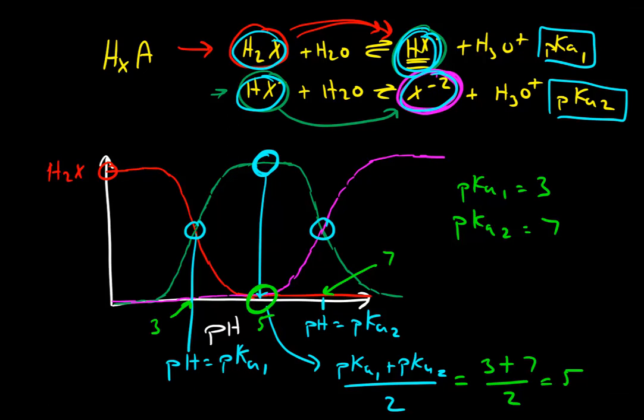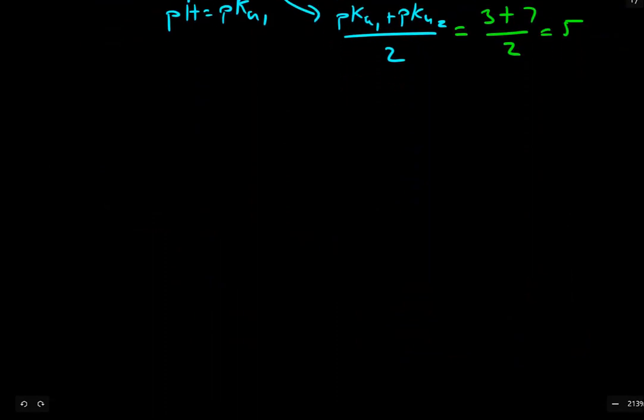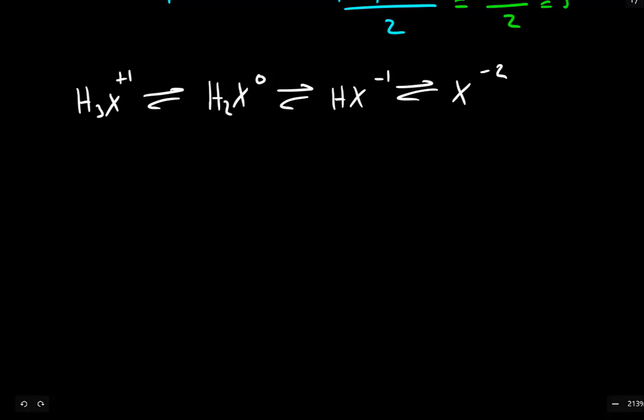And this approach always works for any polyprotic acid. So let's see another example here. We'll quickly go through this one. So let's say we have a triprotic acid, H3X. So a way of abbreviating this is that H3X can become H2X. And let's put some charges here. Let's say this one is plus 1, this one is 0, HX would be negative 1, and X would be negative 2. So each step here, each equilibrium is removing a proton and making an intermediate with one fewer protons and one more negative charge.